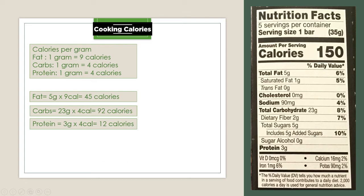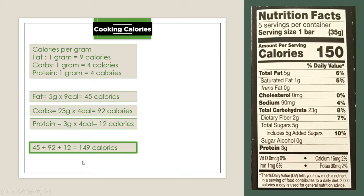So next we will just add all of the calories we have calculated. 45 plus 92 plus 12 equals 149 calories. And if you notice, in the label it is 150 calories. It's okay if the values don't add up exactly because they can be rounded off. I'm not much of an expert on how rounding off is done, but if you are curious, I will be placing the link in the description box below.